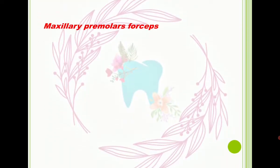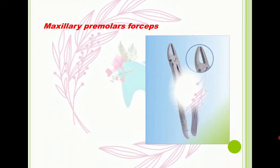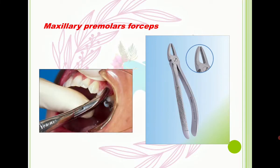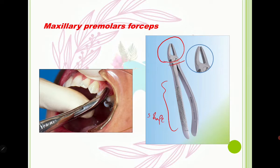Now let's check the maxillary premolars forceps. The working part structure is the same and there is no angle, but look at the shape of the handle — it has an S-shape. In this picture you can see how we apply the forceps and start the extraction procedure.